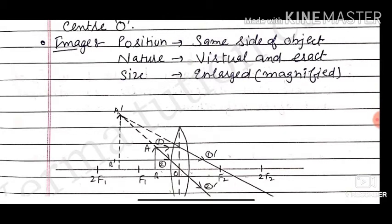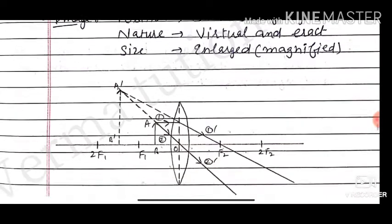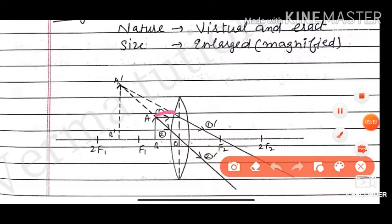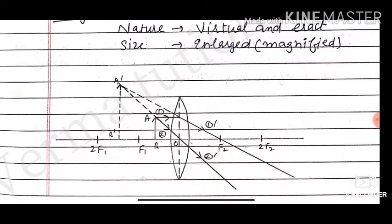Case 6: when the object is kept between F1 and the optical center, the image is virtual, erect, and enlarged — this is the principle of the magnifying glass. The image is on the same side as the object. Since it is a virtual image, dotted lines are used to draw it, and the rays diverge after refraction.